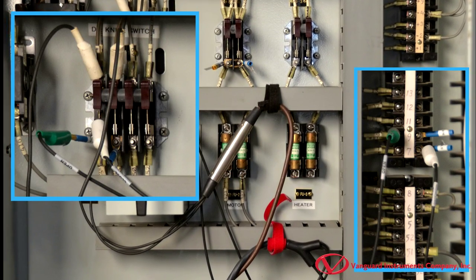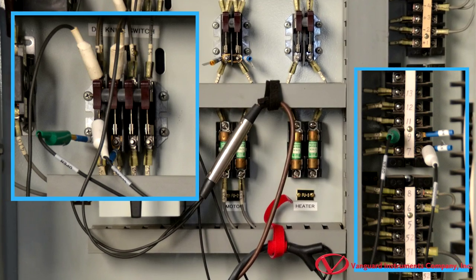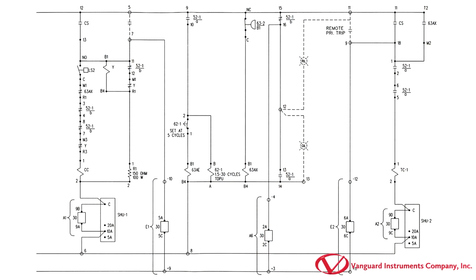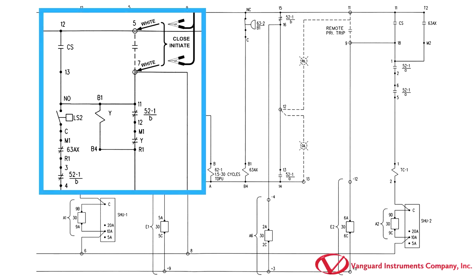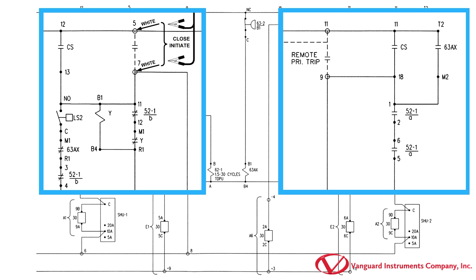The initiate circuit acts like a switch to energize the trip or closed coil. In this illustration, the initiate circuit will connect terminal 5, which is the positive DC source, to terminal 7 of the circuit breaker closed circuit. On the trip circuit, the initiate circuit will connect the positive DC supply to terminal 9 of the trip circuit.